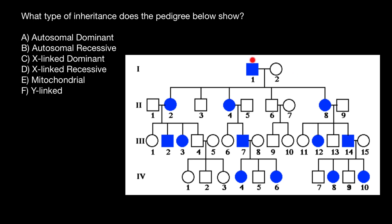Take a look at the first generation — this male is affected, and only his daughters are affected; none of his sons. And in the next generation where daughters are affected, both males and females are affected. For example, take a look here: this son is affected, this female is affected, and both her daughters and sons are affected.